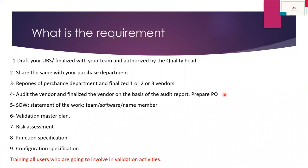So in a short way, let us see the documentation requirements. First, initiate your change control. Draft your URS (User Requirement Specification), finalize it with your team — sit together with your quality team and check and finalize the URS, then authorize with the quality head. Share the URS with the purchase department, who will search for vendors and finalize one, two, or three vendors. Audit the vendor and finalize based on the audit report, then generate the purchase order. After this, prepare the Statement of Work.